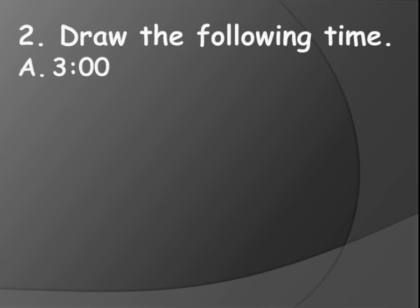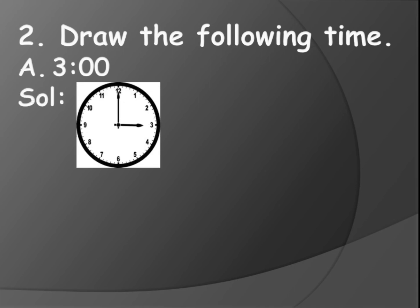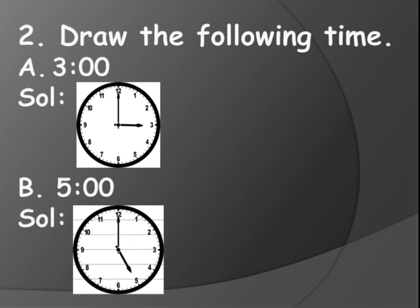3 o'clock: the short hand will be pointing to 3 and the long hand will be pointing to 12 — that means 3 o'clock. Next, 5 o'clock: the short hand will be pointing to 5 and the longer hand, the big hand, will be pointing to 12 — so 5 o'clock. In this way you need to draw the given time.